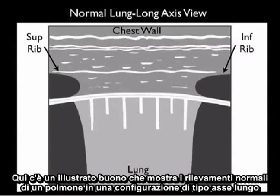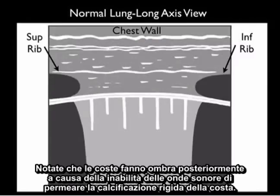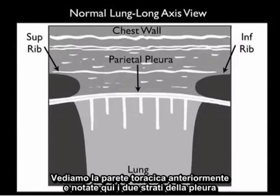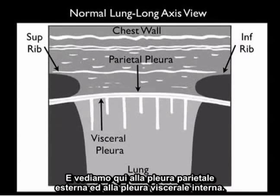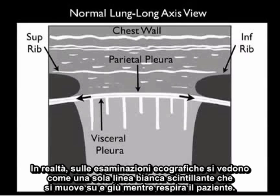Here's a nice pictorial showing the normal findings of a lung in a long axis configuration. Superior rib to the left, inferior rib to the right. Notice that the ribs cast shadows posteriorly due to the inability of the sound waves to permeate the hard calcifications of the rib. We see the chest wall anteriorly and note the two layers of the pleura — the outer parietal pleura and the inner visceral pleura. While I've depicted these as two separate layers, in reality on ultrasound examination they're seen as a single shimmering white line that moves back and forth as the patient breathes.